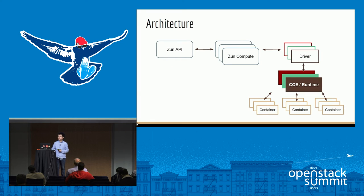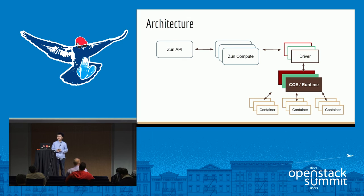This is the architecture of Zun. It has an API for processing REST requests. It has a Zun compute deployed on each compute host to allow the service to scale out. It has different drivers — each driver is for driving different COEs or container runtimes. The containers are managed by the COEs and runtimes.